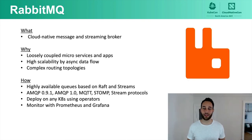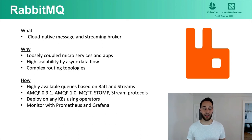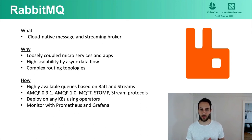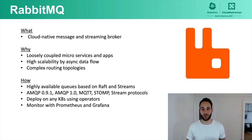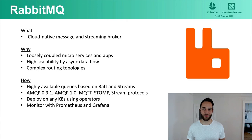To sum up: RabbitMQ is a cloud-native message and streaming broker that enables loose coupling, high scalability, and complex routing topologies. Modern queue types include the Quorum queue (based on the Raft consensus algorithm, introduced in 3.8) and Streams (introduced in 3.9). You can deploy RabbitMQ natively on any Kubernetes and integrate it with Prometheus and Grafana. Thanks for watching.